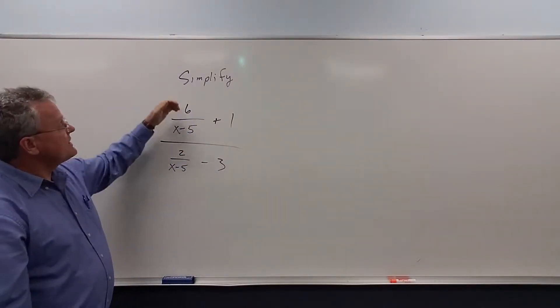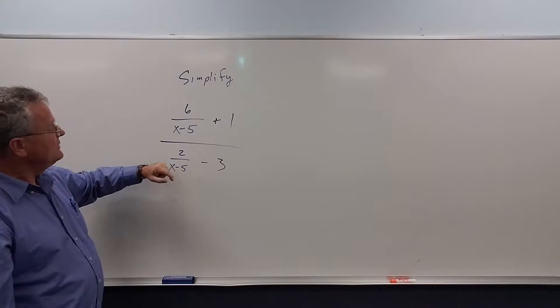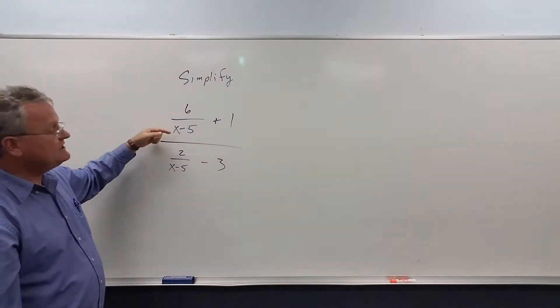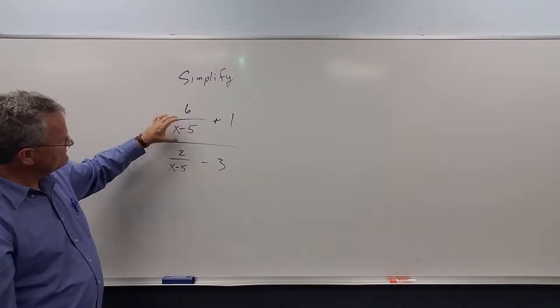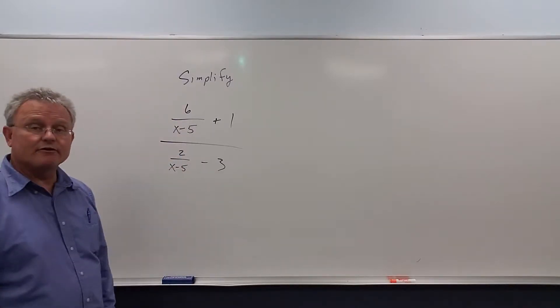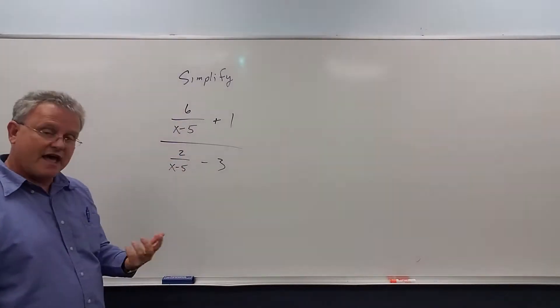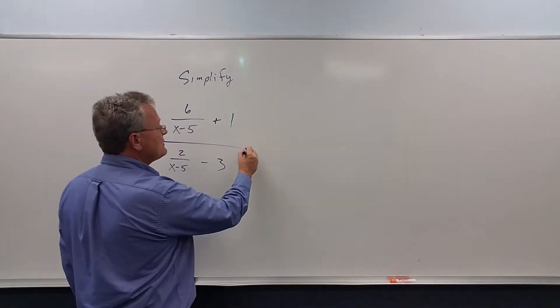Again, another example of a complex fraction. We need to find the LCD. Well, there's only one denominator, and both of these fractions have a denominator of x minus 5, so that is the least common denominator.